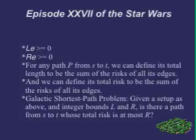Each edge E has an integer length L(E), which is greater than or equal to zero. Certain edges represent routes that are more heavily patrolled by evil Imperial spacecraft, so each edge E also has an integer risk R(E), which is greater than or equal to zero, indicating the expected amount of damage incurred from space battles if one traverses this edge.